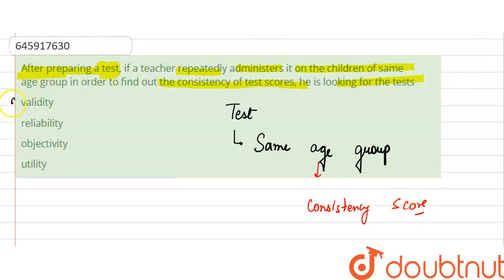So what do you want to see in the test? Validity, reliability, objectivity or utility. So he wants to check the objectivity.